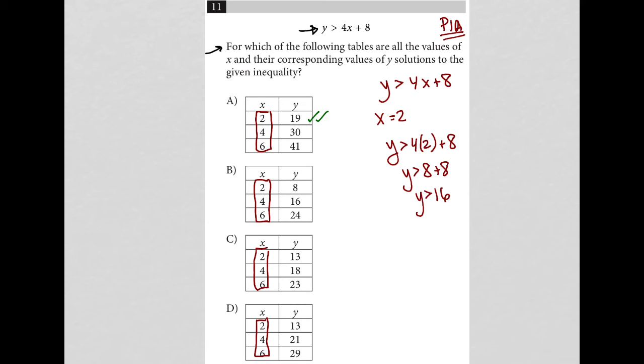For choice B, my y value is 8. So that is not true. 8 is not greater than 16. But I know that I need it to be. I need my y value to be greater than 16. So choice B is gone.